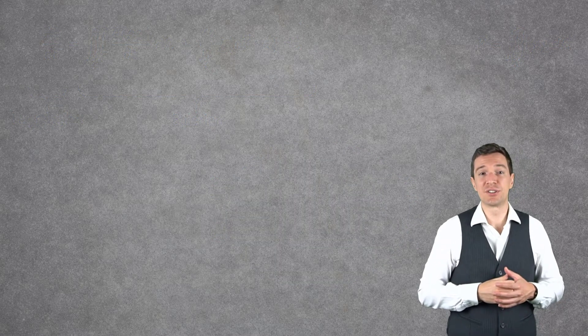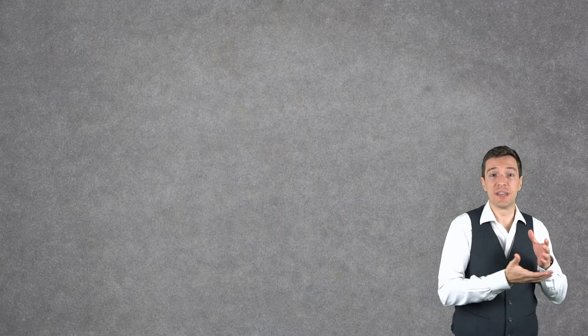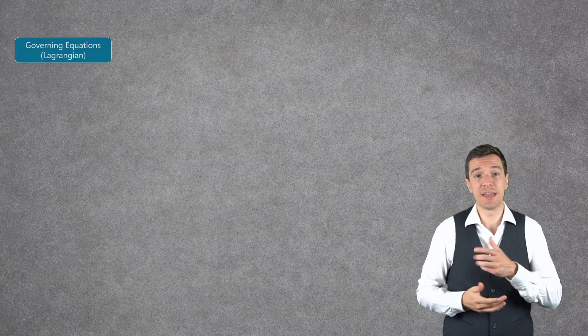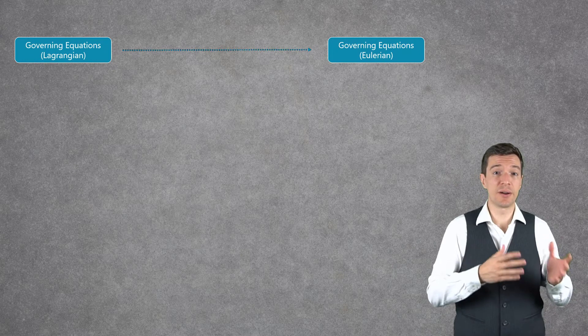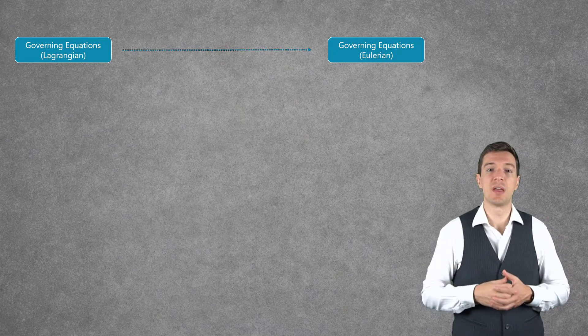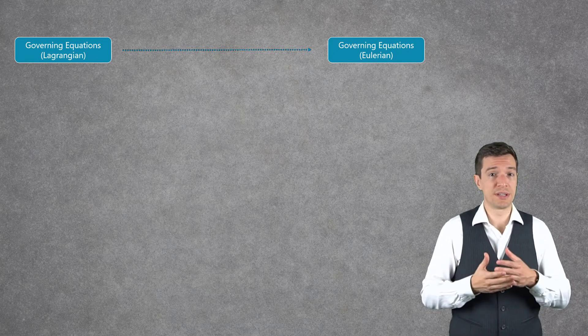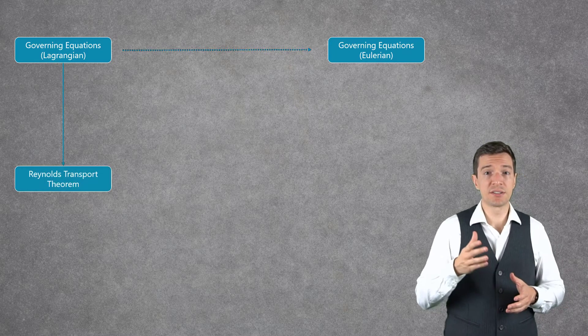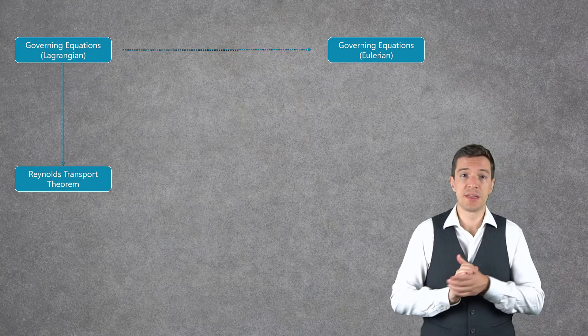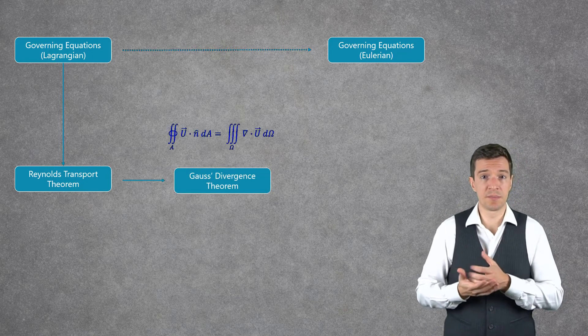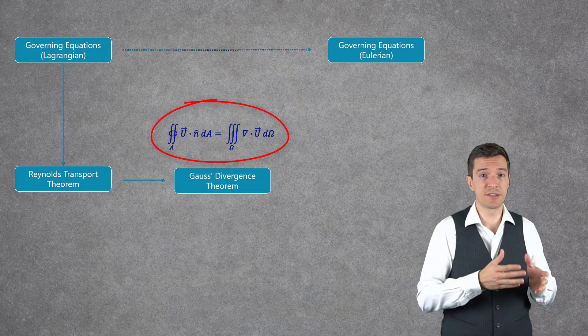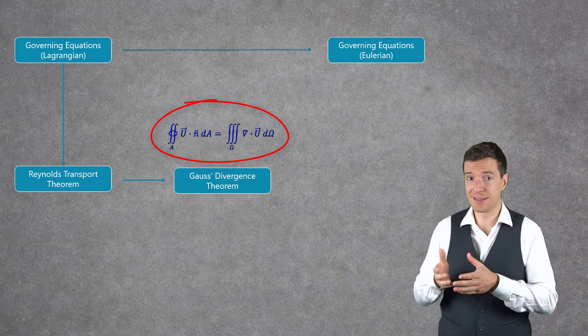The next lessons will show how to move from the governing equations in the Lagrangian form into the governing equations in the Eulerian form. We will be able to do this using first the Reynolds Transport Theorem. Then, we will apply the Gauss Divergence Theorem to convert the surface integrals into volume integrals.